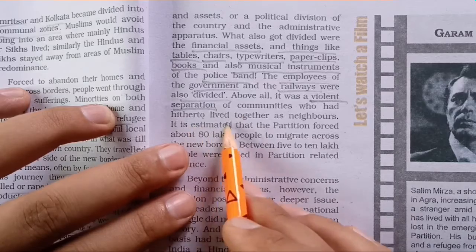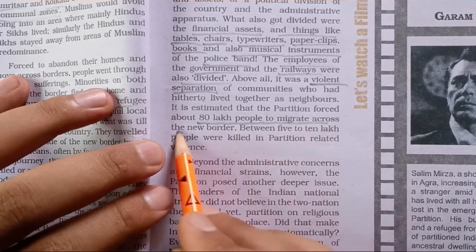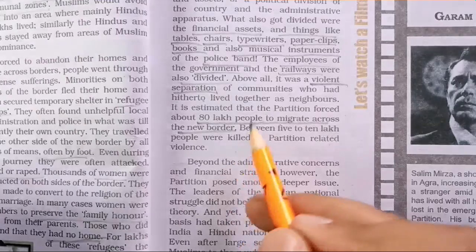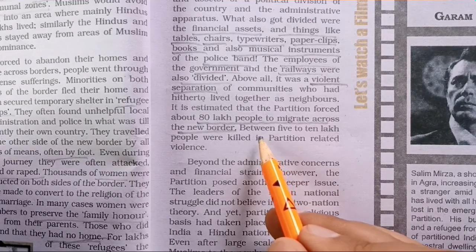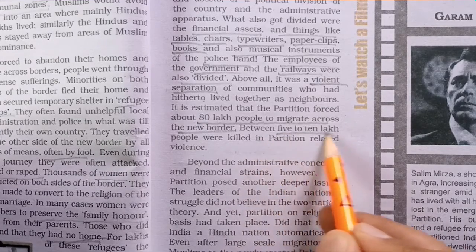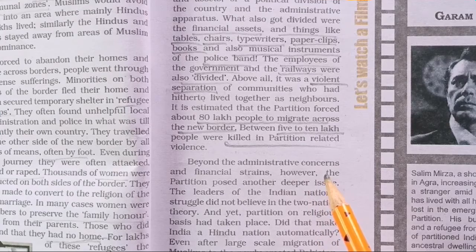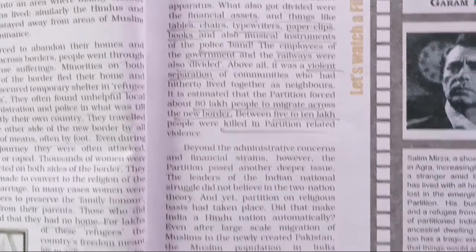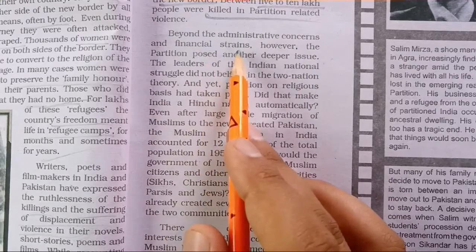It is estimated that partition forced around 80 lakh people to migrate across the new border. On the other hand, around 5 to 10 lakh people were killed in partition-related communal violence. Beyond the administrative and financial strains, partition posed a deeper issue: the leaders of the Indian nationalist struggle did not believe in the two-nation theory, but with British intervention, India was separated into two parts, with Pakistan created as a separate country for Muslims.